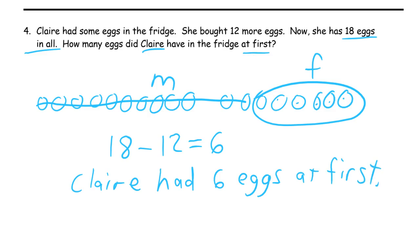And that's what you've got to have: a labeled picture, a number sentence, and a word sentence that says what your answer is. You've got to have all three of those things for every single word problem.